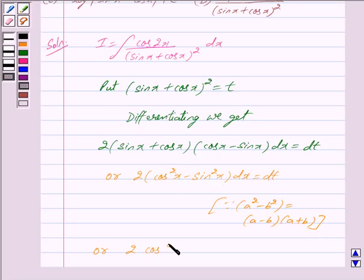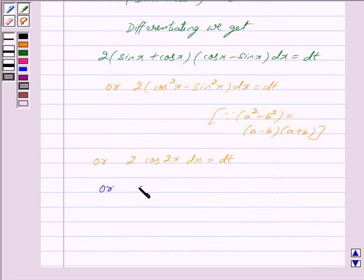So we get cos 2x dx equals cos 2x dx equals 1 by 2 dt.